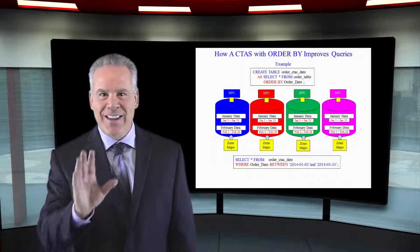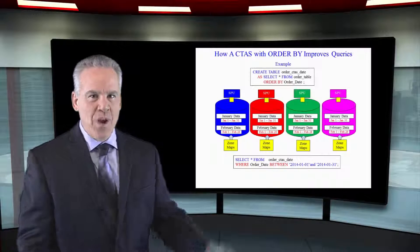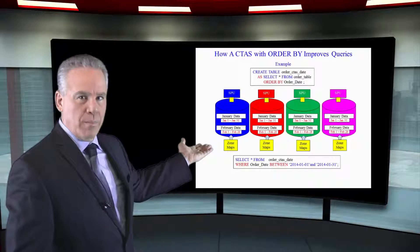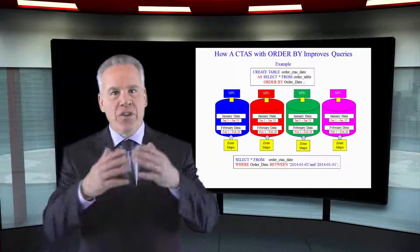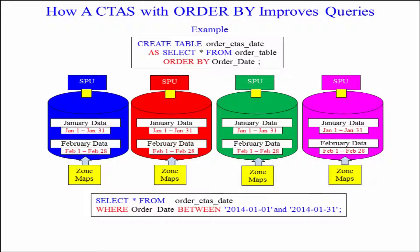Take a look at this. This is a beautiful example. We have ordered by the month of order date, and now all the January data is in the first extent. The February data is in the second extent. So, of course, those zone maps are on each extent.